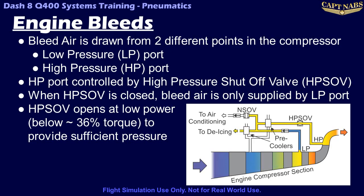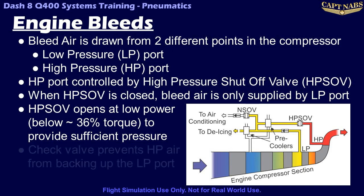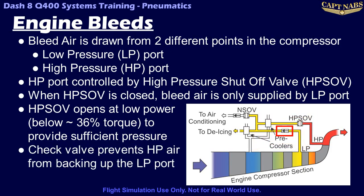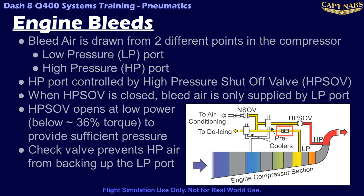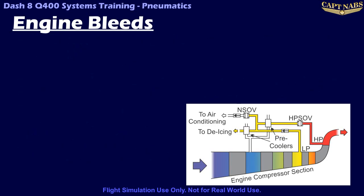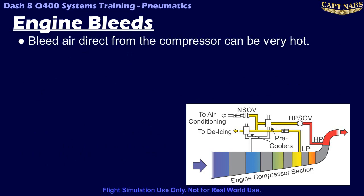As the engine speed accelerates, the high pressure shutoff valve closes once the low pressure port can provide sufficient pressure. This usually occurs around 36% torque and is sometimes apparent as a power spike or cabin pressure spike during small power changes around this point. Note there is also a check valve in the low pressure line that prevents high pressure air from the HP port from flowing back outwards through the low pressure port. Due to the additional compression, air from the high pressure port is much hotter than air from the low pressure port and must be cooled by a pre-cooler prior to entering the aircraft systems.